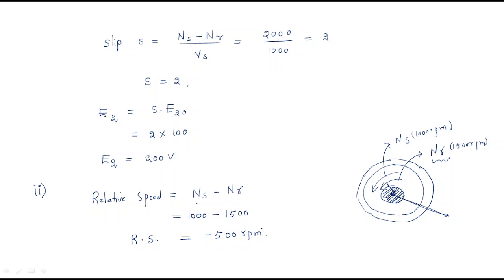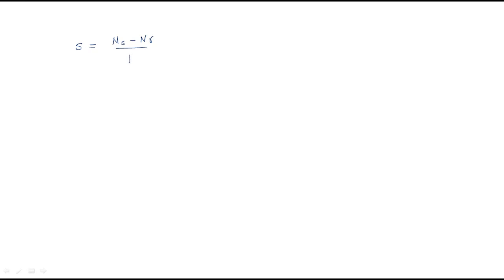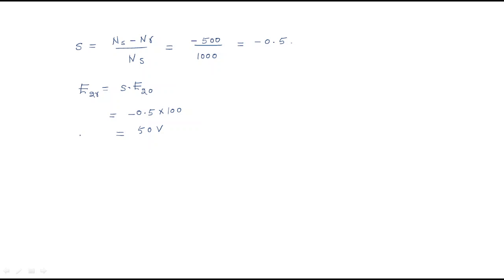From the relative speed, we find the slip: slip = (Ns − Nr) / Ns = −500 / 1000 = −0.5. The EMF developed is E2 = slip × E2_0 = −0.5 × 100 = −50 volts. So the voltage developed between the slip rings is −50 volts.